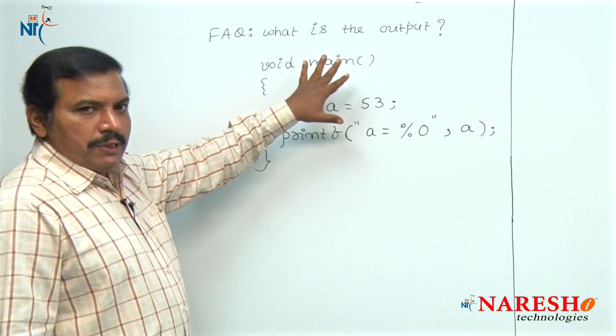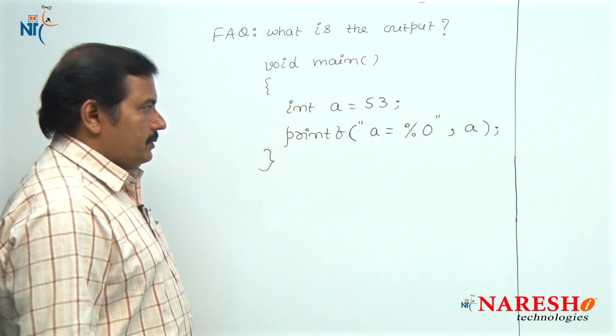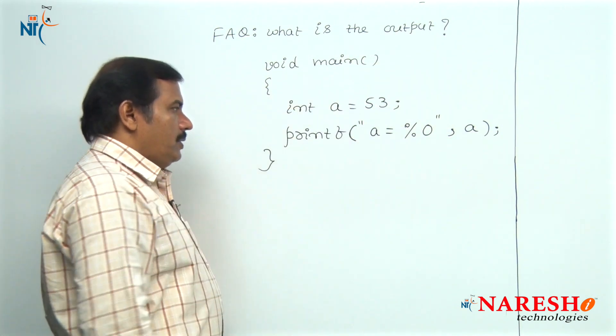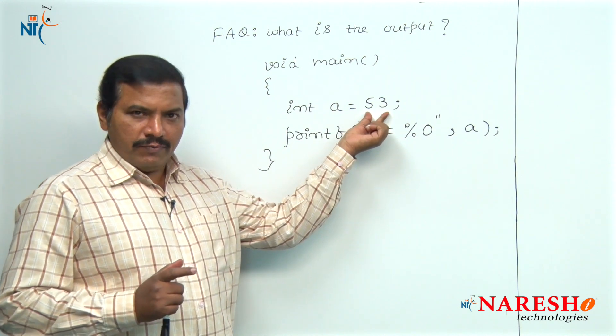Let us watch this question, what is the output of the following code? In this given code, one of the integer constant given is 53.